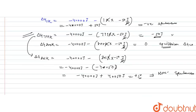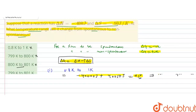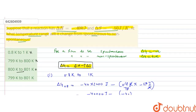At 799 kelvin ΔG = -50 joules, which is spontaneous, and at 801 kelvin ΔG = +50 joules, which is non-spontaneous. So for the temperature range 799 to 801 kelvin, the reaction changes from spontaneous to non-spontaneous. The correct answer to this question is option D. I hope you understood the solution — thank you.